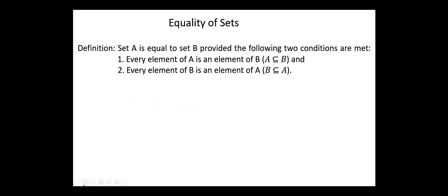Next, equality of sets. Set A is equal to set B provided the following two conditions are met: every element of A is an element of B, and every element of B is an element of A. For example, if the set A = {1, 2, 3, 4} and the set B = {3, 4, 2, 1}, then these two sets are equal, since every element in A is an element in B and every element in B is an element in A. It's obvious that equal sets should have the same size.